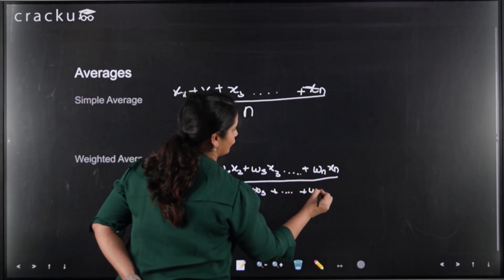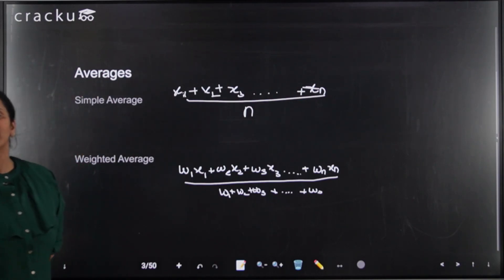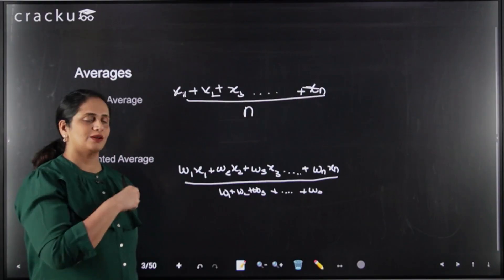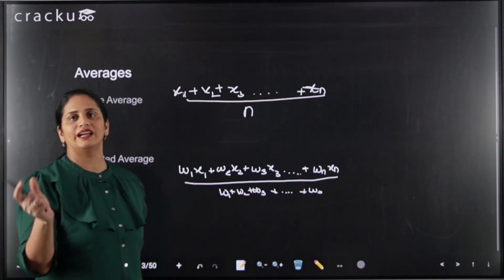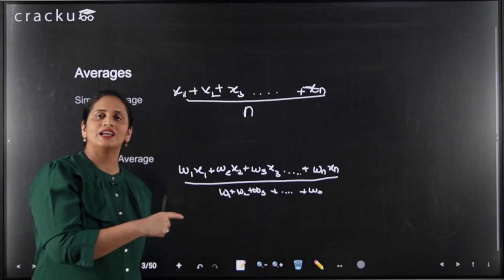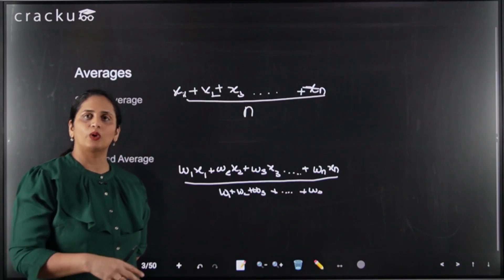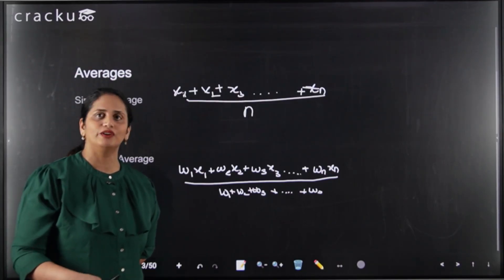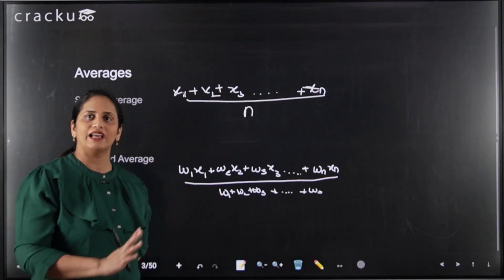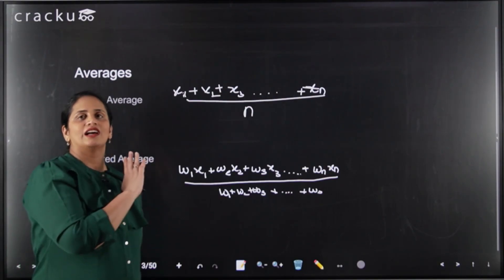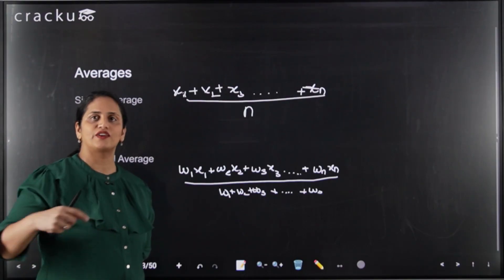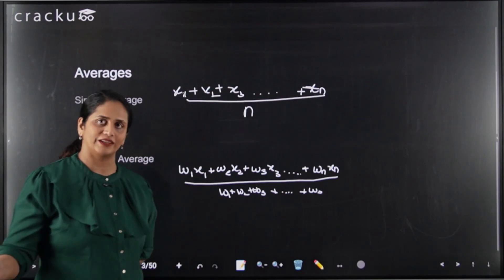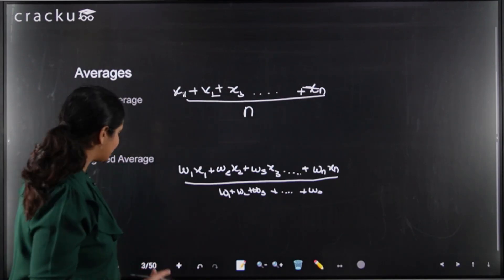You would have used this when calculating your GPA. Each subject has a subject weightage, so you multiply your grade in the subject by its weightage, take the sum, and divide by the total credits for that semester. That weighted average gives you the GPA for the semester.